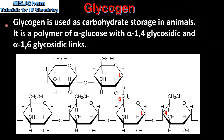Next we look at glycogen. Glycogen is used as carbohydrate storage in animals. It is a polymer of alpha glucose with alpha 1,4 and alpha 1,6 glycosidic links. Here we have a section of a glycogen molecule. The monomers are alpha glucose molecules and they are bonded with alpha 1,4 glycosidic links and alpha 1,6 glycosidic links. Like amylopectin, glycogen is a branched chain polymer, but glycogen has many more branches than amylopectin.